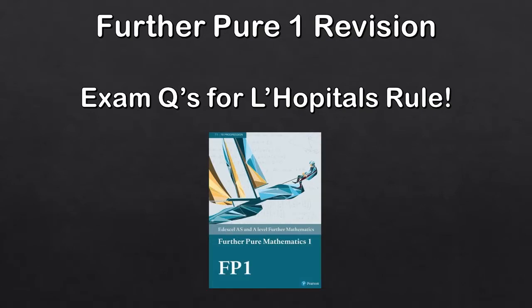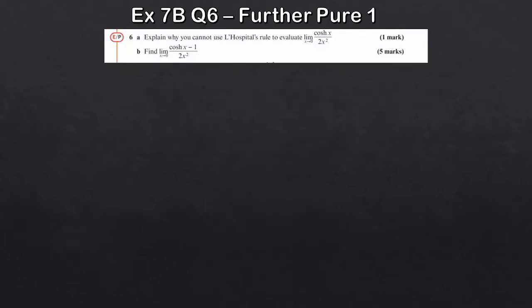Welcome back to another Further Pure 1 revision video. Today we're going to take a look at L'Hôpital's rule. This is chapter seven in the textbook, under the chapter called Methods in Calculus. It's a subsection, but it's quite an important topic — usually about four or five marks for a question from this chapter. Let's jump into the questions.